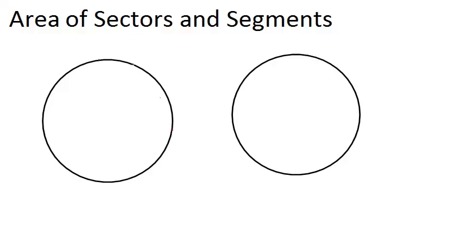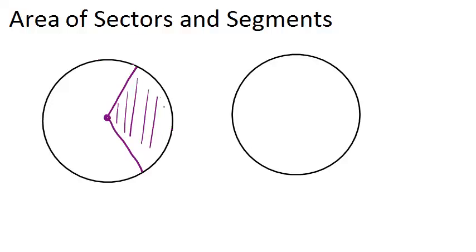In this video, we are going to learn how to find the area of sectors and segments in circles. If we have a circle and draw two radiuses from the center of the circle, the portion of the circle that we have created right here is called a sector. And if we want to find the area of that sector, we're really just figuring out the area of a portion of the circle.